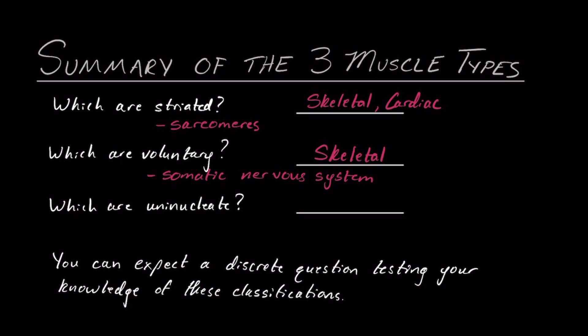And finally, which are going to be uninucleate? That's going to be predominantly smooth muscle and cardiac muscle, with an asterisk. Some cardiac muscle cells can actually have two nuclei, but for the purposes of the MCAT, they probably won't expect you to know that in the heat of the moment, so just treat them as uninucleate. You can expect a discrete question testing your knowledge of these classifications on the MCAT, so know it well.